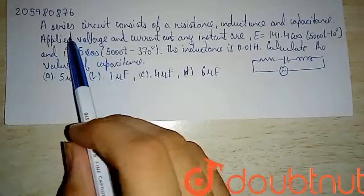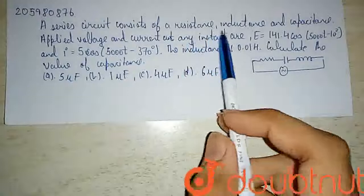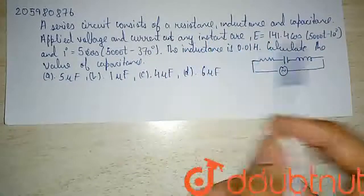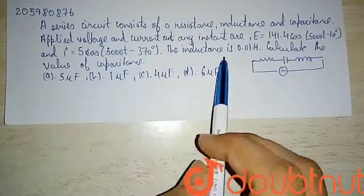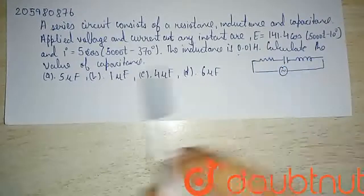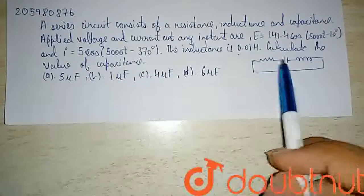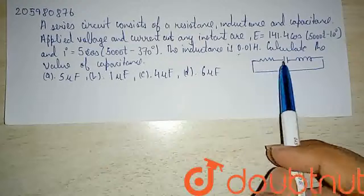So this question is: a series circuit consists of a resistance, inductance and capacitance. Applied voltage and current at any instant are given. The inductance is 0.01 Henry. Calculate the value of capacitance. We have an AC circuit with connected resistance, capacitor and inductor.